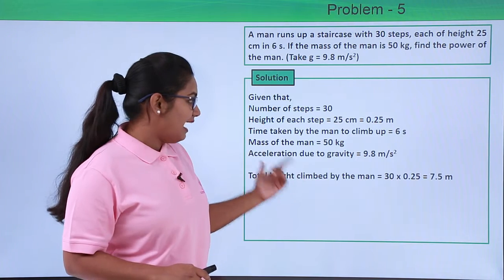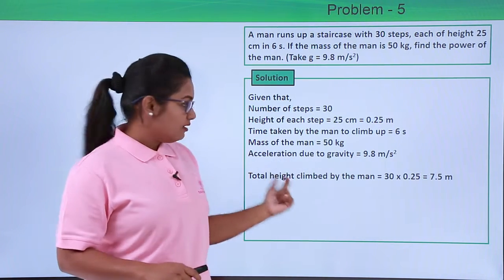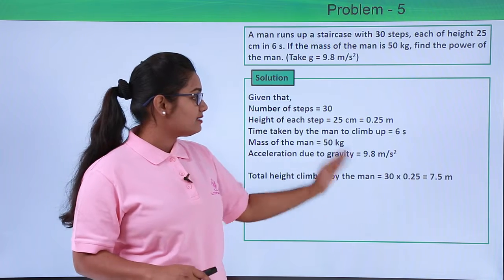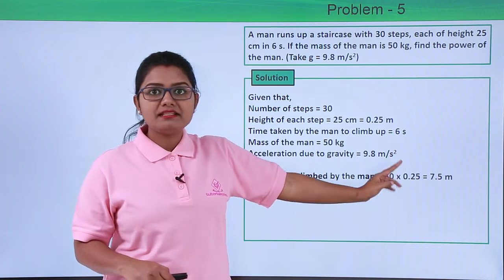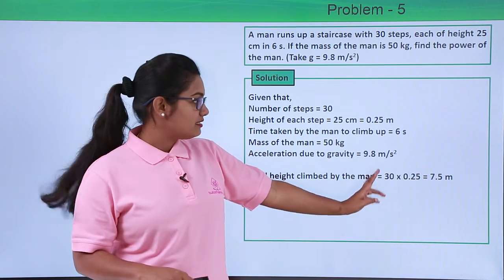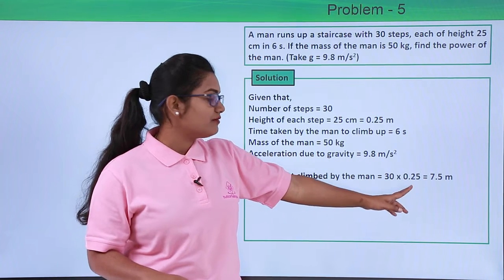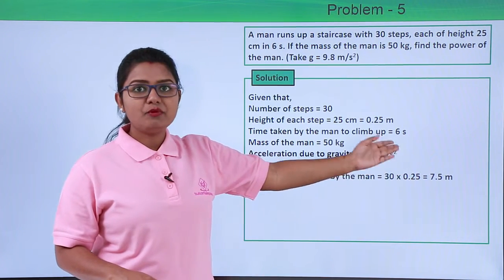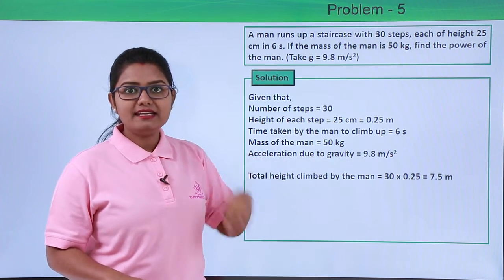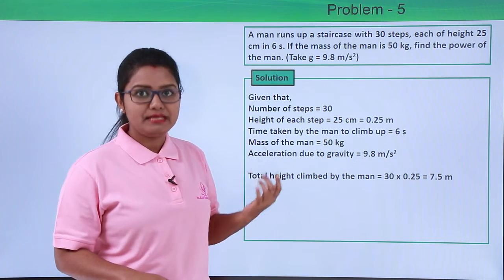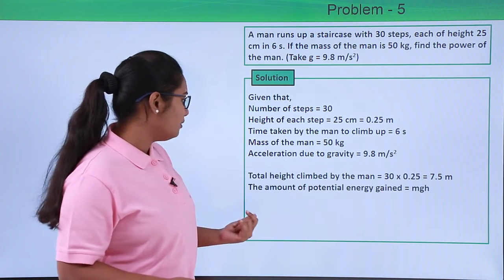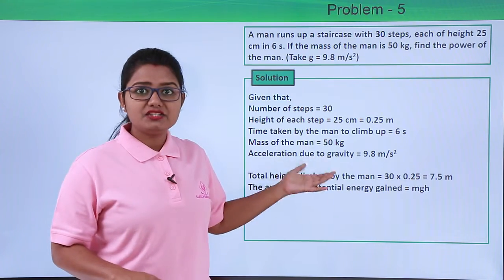For that, the total height climbed by the man has to be calculated. The total height climbed by the man is the number of steps multiplied by the height of each step, which is 30 multiplied by 0.25, and this gives 7.5 meters. So the total height climbed by the man is 7.5 meters.